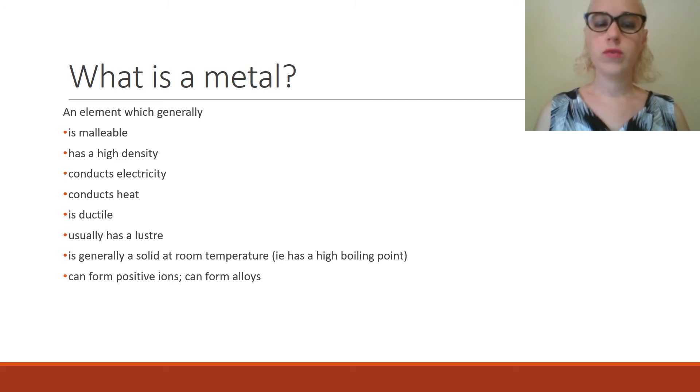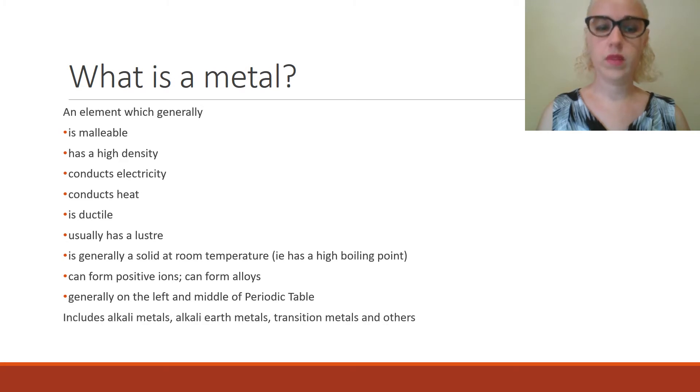Usually metals will form positive ions and they can form alloys, which is a mixture of different types of metals. Generally, we find them on the left and the middle of the periodic table. Metals include alkali metals, alkali earth metals, transition metals, and some others as well.